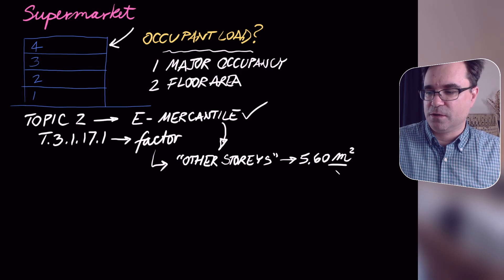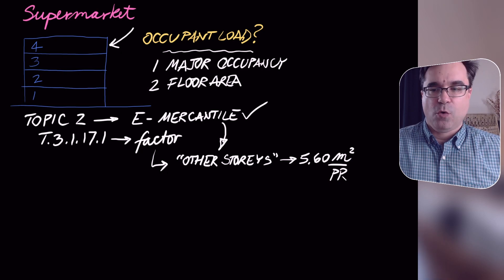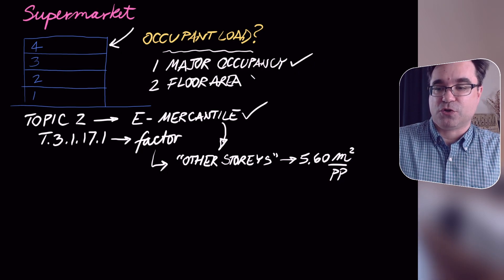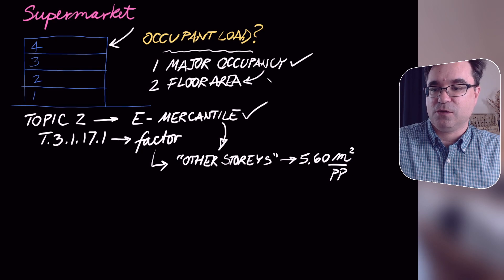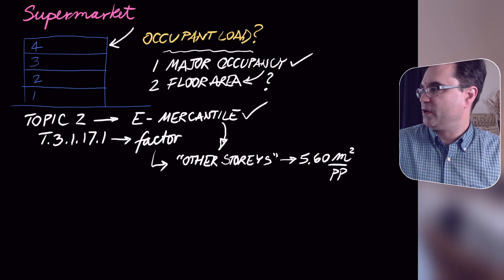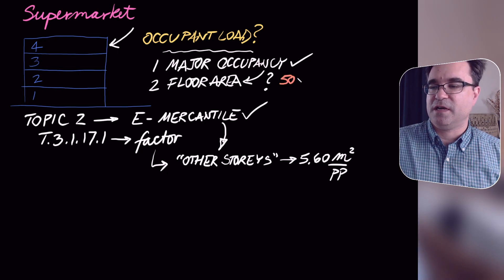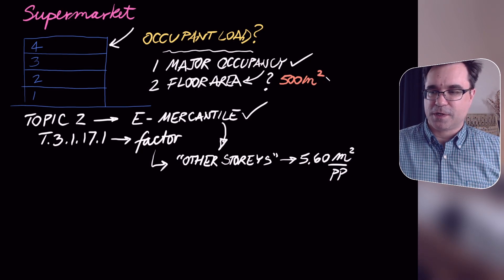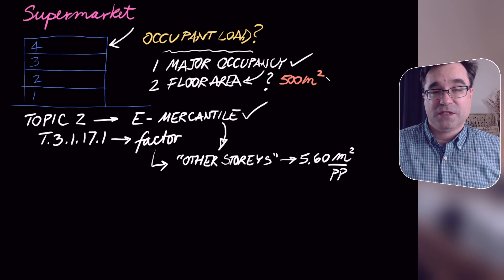Now that we have the major occupancy and its factor, we need the floor area for this space. We are told that the floor area for the fourth story of the supermarket is 500 m².